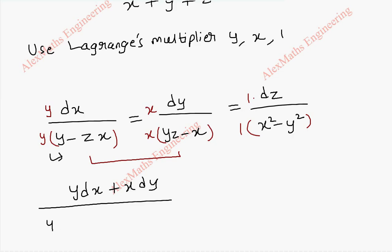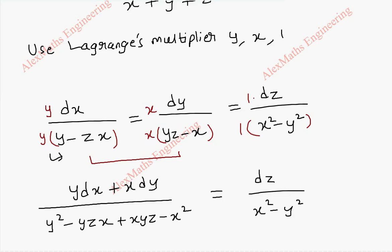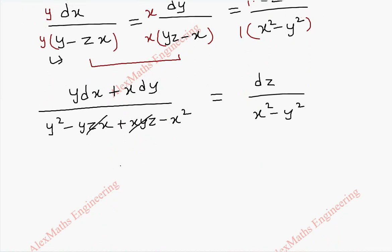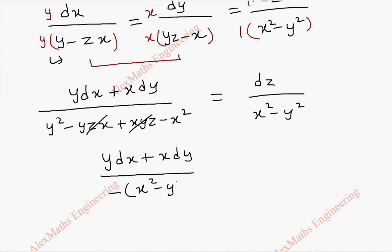Multiplying y inside the denominator gives y square minus yzx plus xyz minus x square, which equals dz by x square minus y square. It is possible to cancel the two middle terms as they are the same with opposite signs. Taking minus in common from the denominator gives minus times x square minus y square. So it is possible to cancel x square minus y square on both sides.